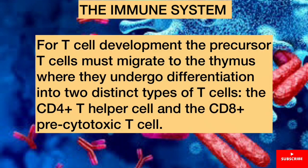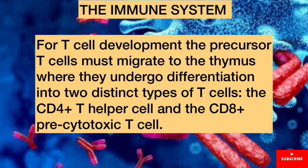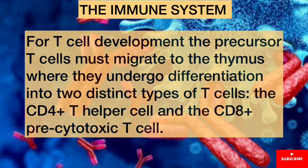For T cell development, the precursor T cells must migrate to the thymus where they undergo differentiation into two distinct types of T cells: the CD4+ T helper cell and the CD8+ precytotoxic T cell. So unlike B cells, which are produced and undergo maturation in the bone marrow, T cells are produced in the bone marrow but must migrate to the thymus in order to undergo maturation.